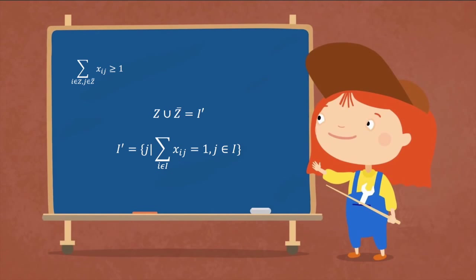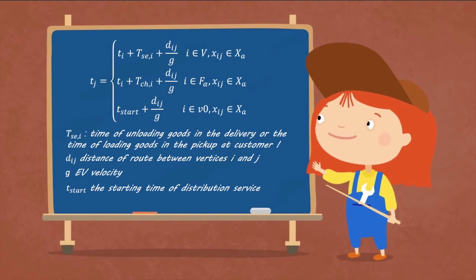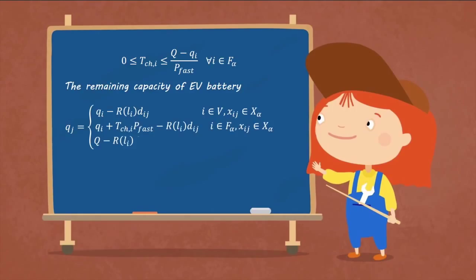The second group is time constraints. For vertex J that has been visited, the arrival time T-J is calculated as shown below. Now we introduce the first time constraint: the remaining capacity of EV battery is calculated by the function of Q-J.